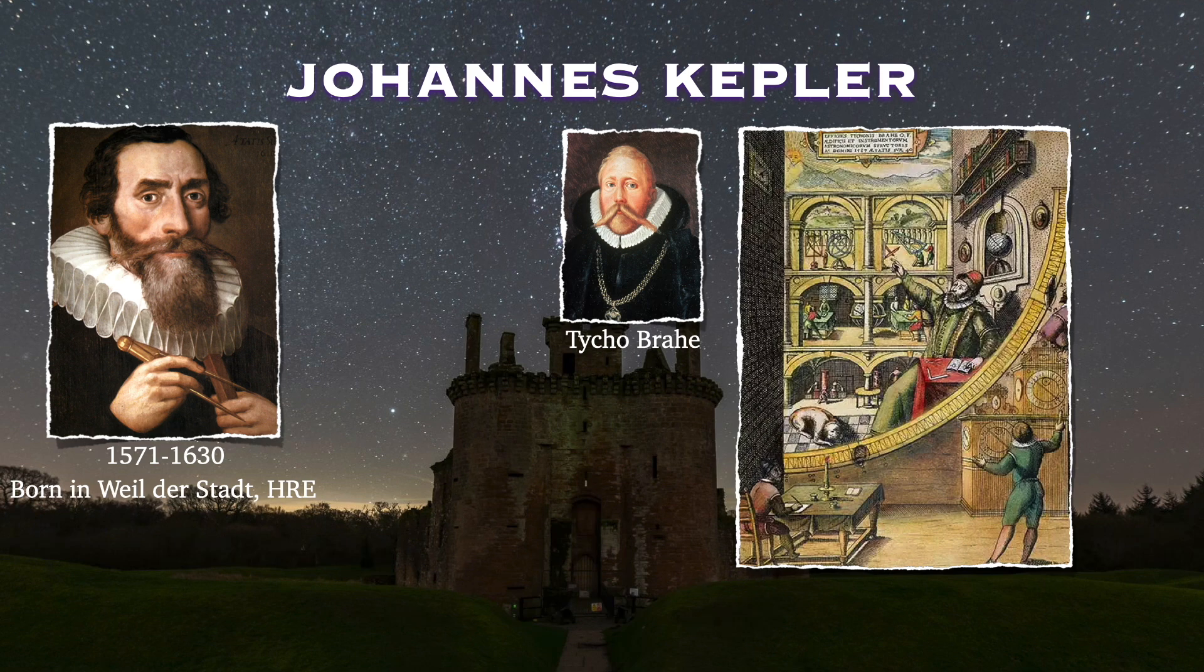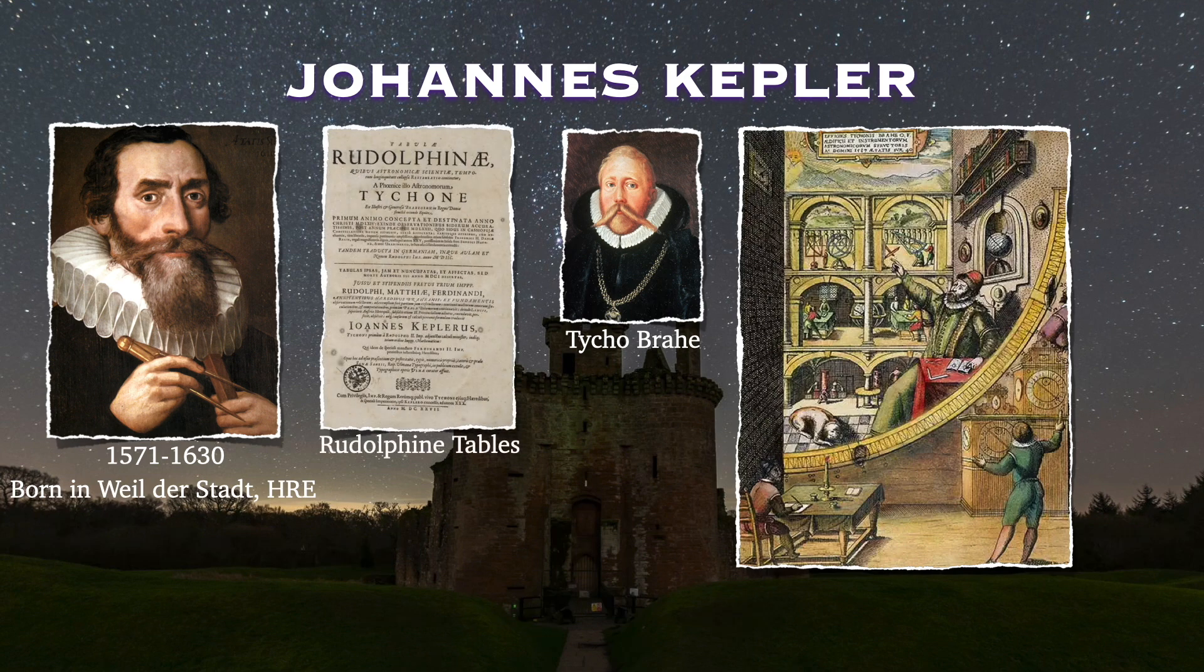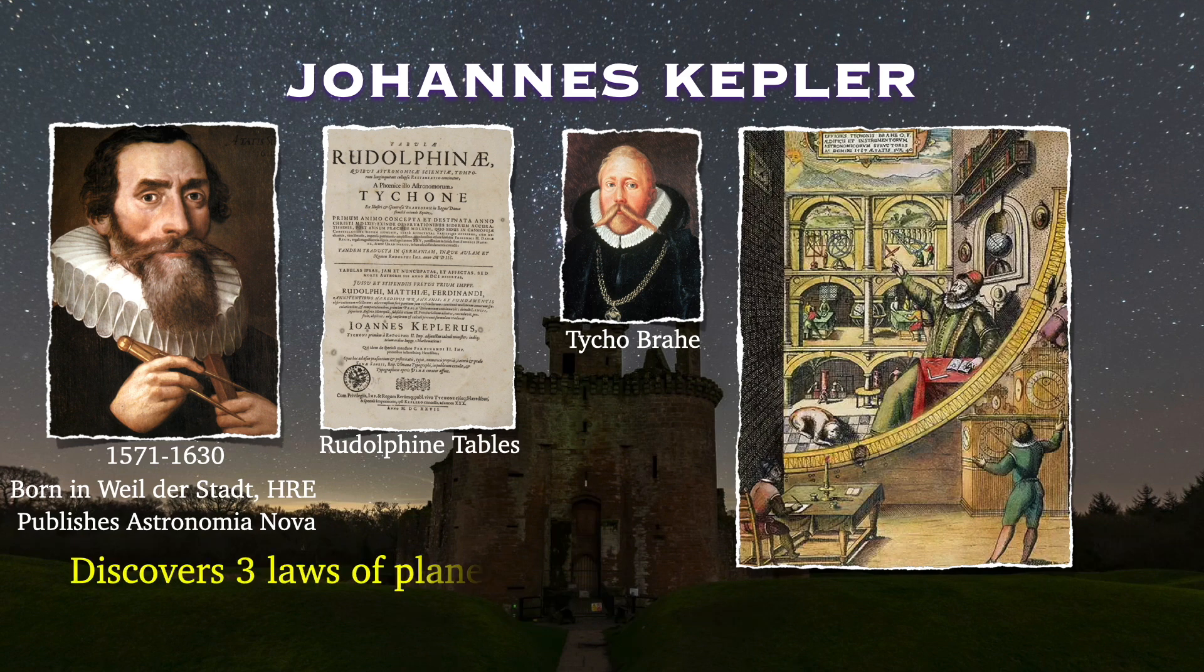Now apparently, Kepler and Brahe didn't have a very good relationship, but they shared the same passion for astronomy. And when Brahe died, while on his deathbed, he asked Kepler to make sure that all the hard work and data not have been for nothing. Well, true to his word, Kepler took this data and published a very famous book called the Astronomia Nova, where he introduced his new model for the solar system. And based on this data, he discovered three laws of planetary motion, although only the first two were published in the Astronomia Nova.